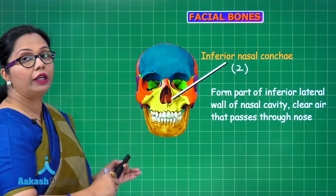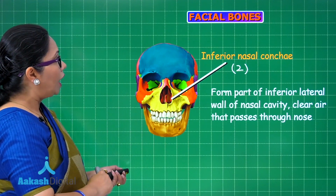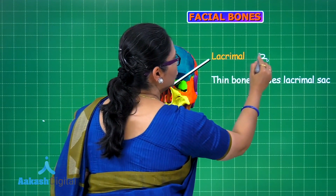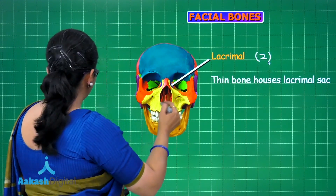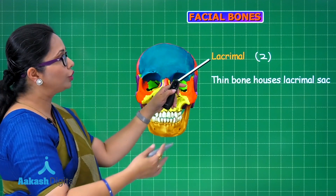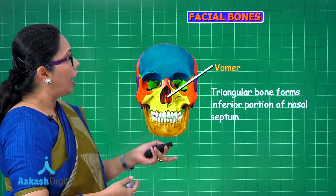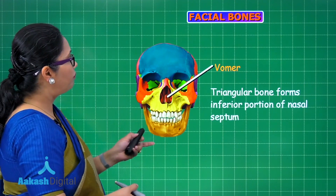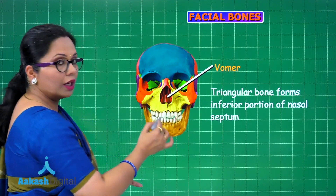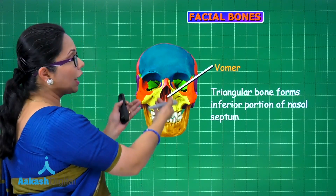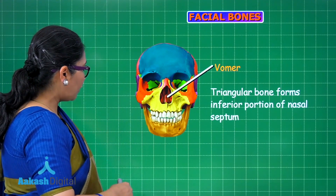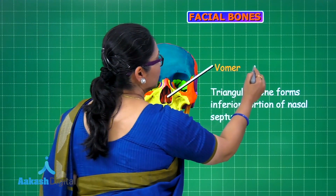The lacrimal bones are the smallest of the facial bones; they are paired and are located at the side of the eye orbit, enclosing the lacrimal sac — the tear sac. The vomer is a single unpaired bone forming part of the nasal septum — specifically the inferior posterior part; the front of the nasal septum is made of hyaline cartilage.